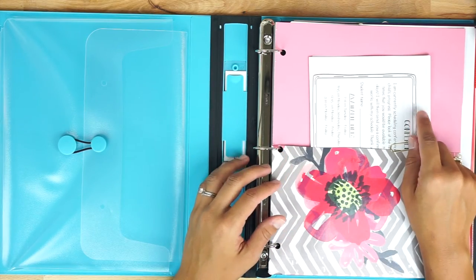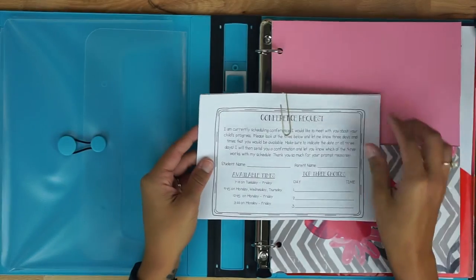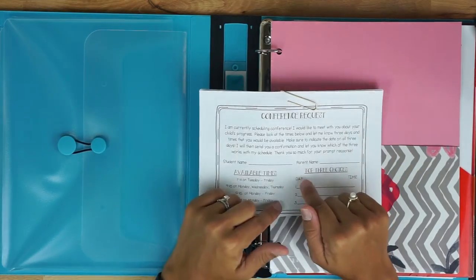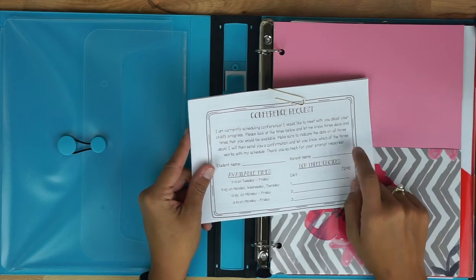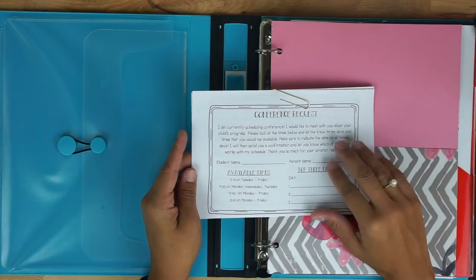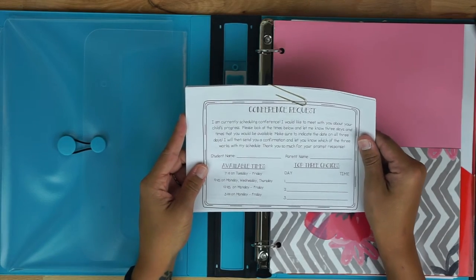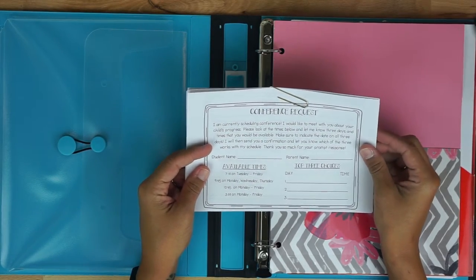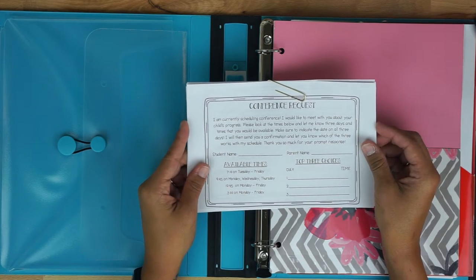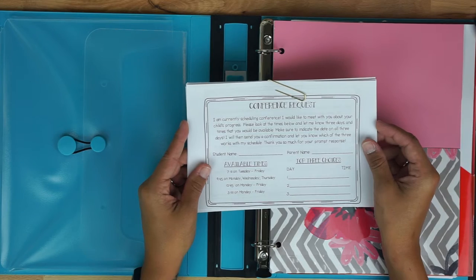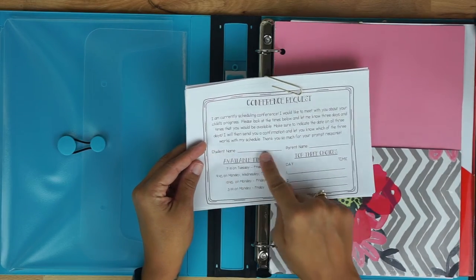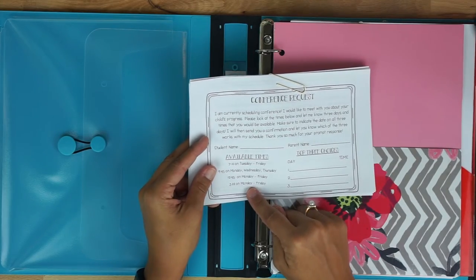So when I go to set up conferences with my parents they will get home one of these and this is just a conference request form. These are for last year so I have to make ones for this year that will have my times. So these are some old ones. Parents will see this receive this in their communication folder and it just says I'm currently scheduling conference I would like to meet you about your child's progress please look up times below and let me know three days and times that you would be available make sure to indicate the date on all three days I will then send you a confirmation and let you know which of these three work with my schedule.